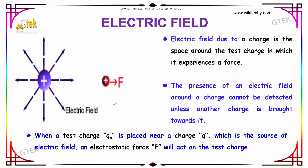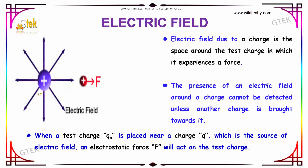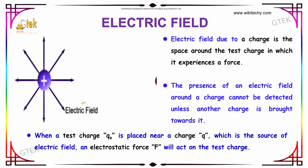First, let us discuss about the electric field. The electric field due to a charge is the space around the charge in which it experiences a force. You can see here the presence of an electric field around a charge cannot be detected unless another charge is brought towards it. When a test charge Q0 is placed near a source charge Q, the electrostatic force F will act on the test charge.